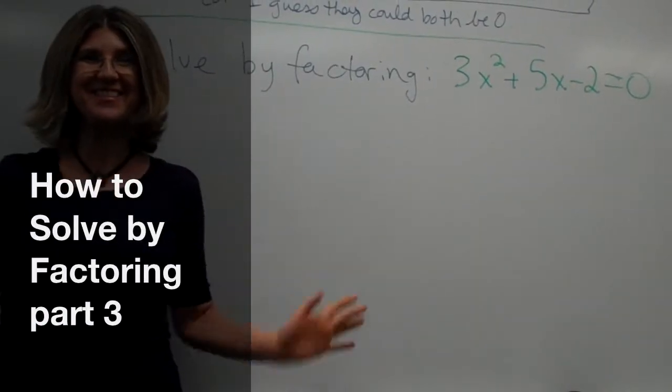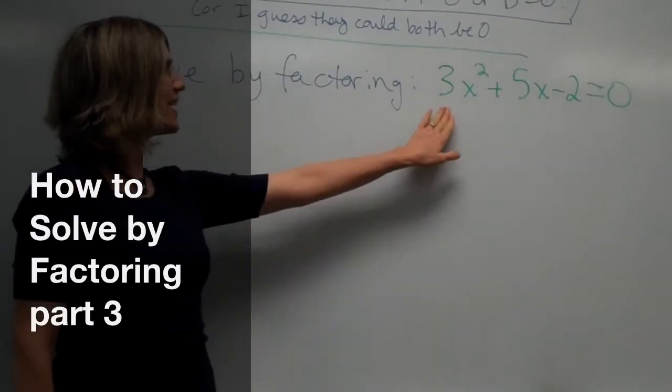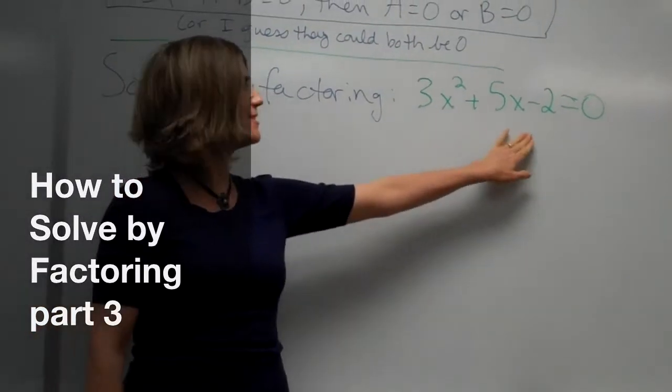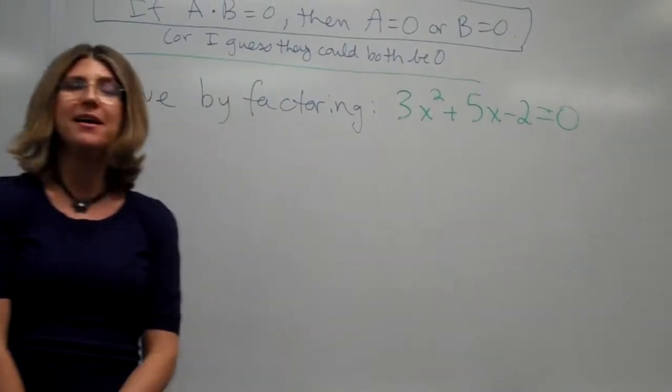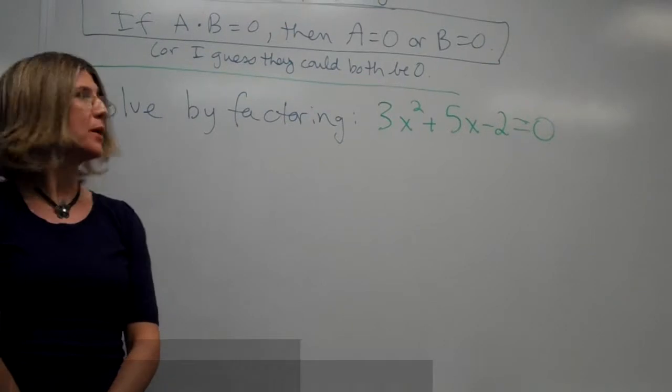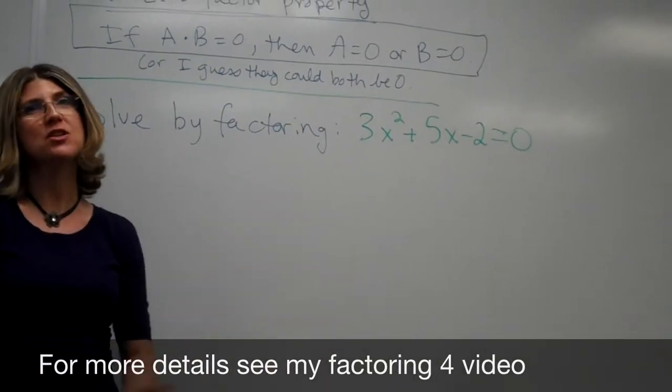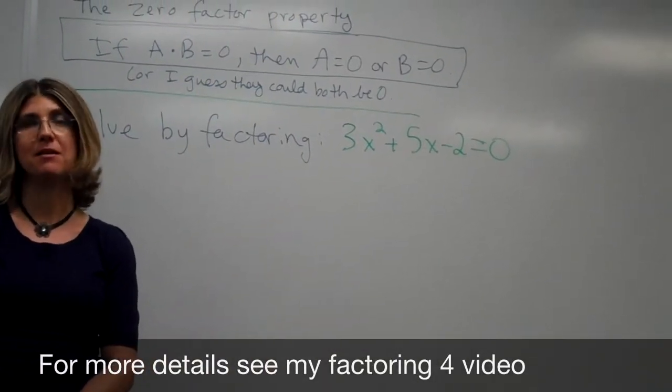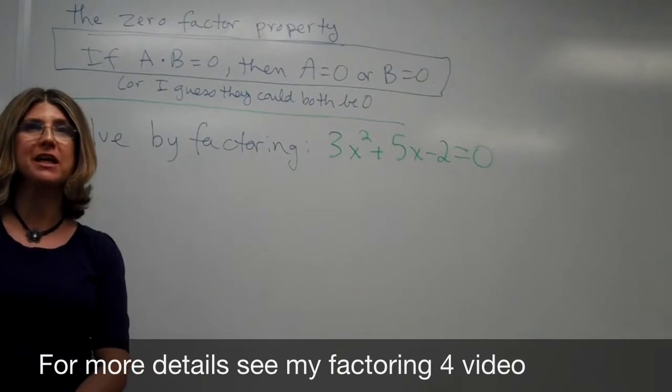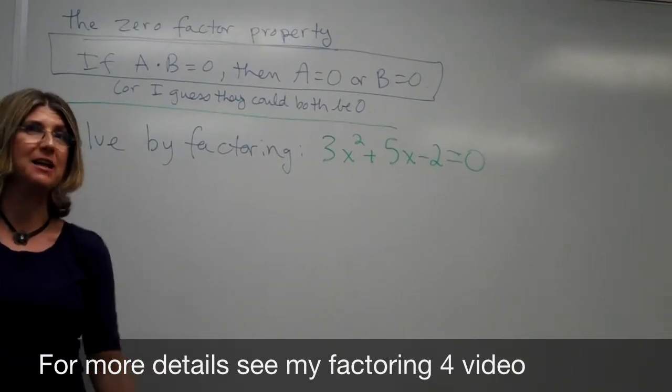Hi, superclass. Let's solve this one by factoring. We have 3x squared plus 5x minus 2 equals 0. Now, in order to factor this, we will go ahead and factor this using the guess and test method. This is already shown in another video, so I'm going to kind of skip to the end of that.